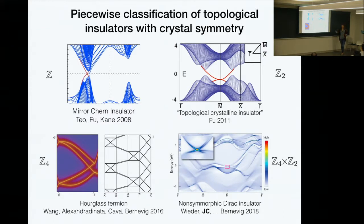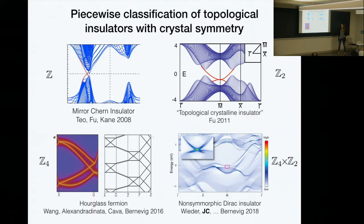The topological crystalline insulator is protected by a combination of time reversal and C4 symmetry. Prior to that, Teo, Fu, and Kane introduced the mirror Chern insulator, which is protected by mirror symmetry. The first has a Z2 classification, the latter has a Z classification. There are also more recent topological crystalline insulators protected by combinations of non-symmorphic symmetries, but there's no unifying principle to understand how their classifications relate to each other.